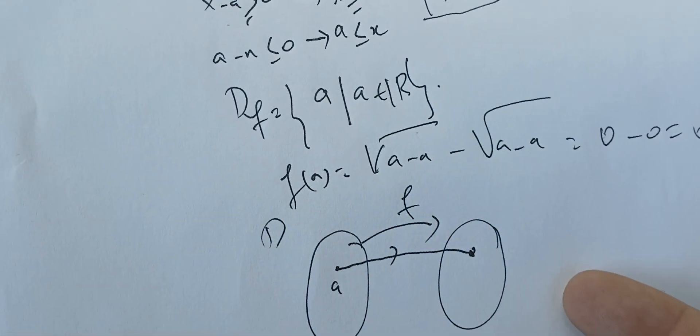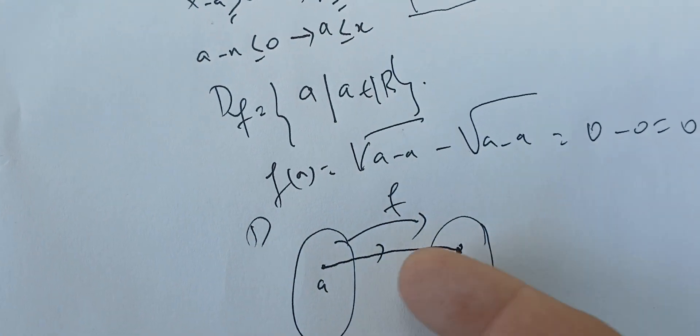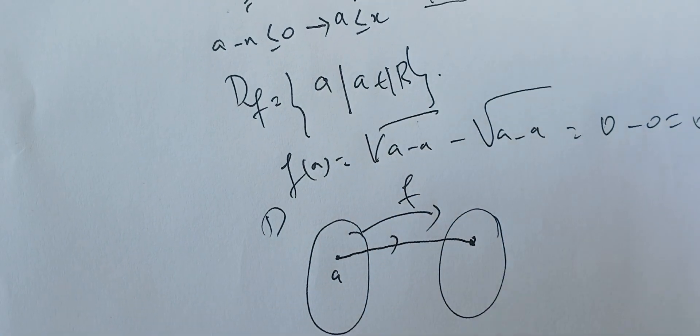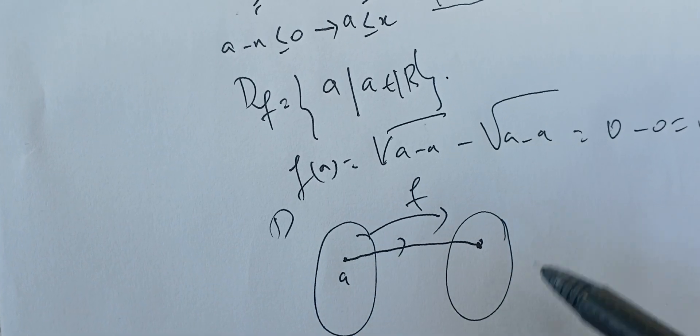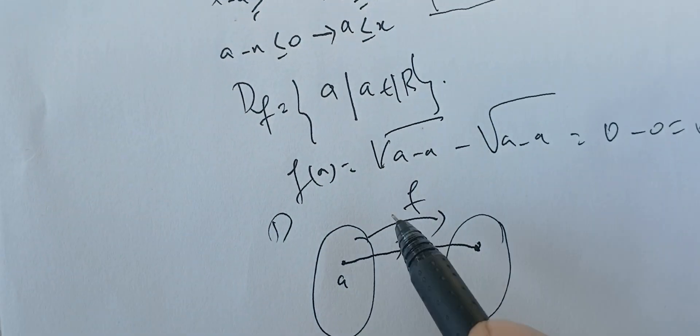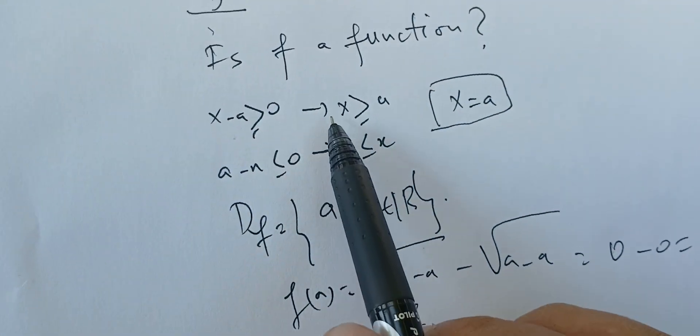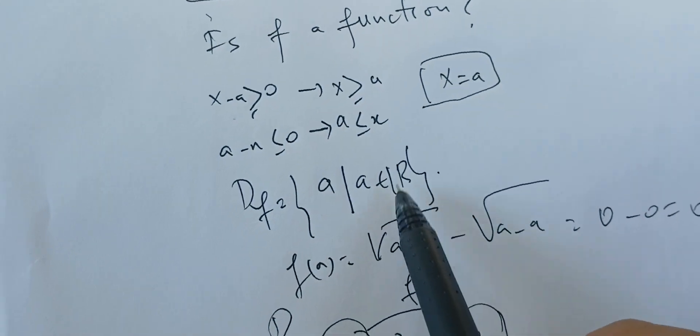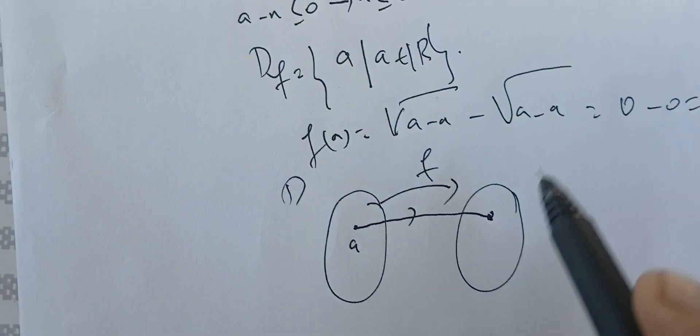And the range must have only one point because we can't have a function if a has two images. In this case, f is a function if f is defined this way, if the domain is defined only by this point a, and it has the image 0.